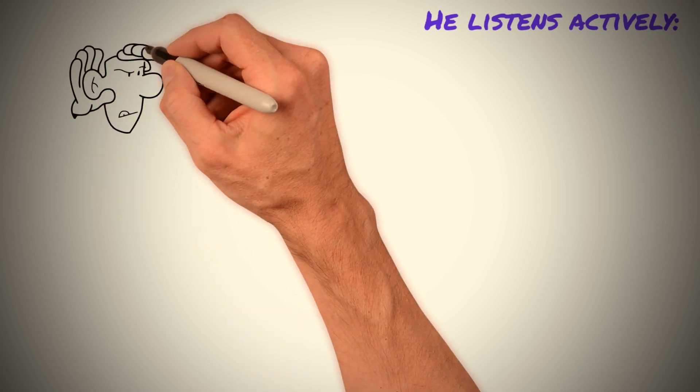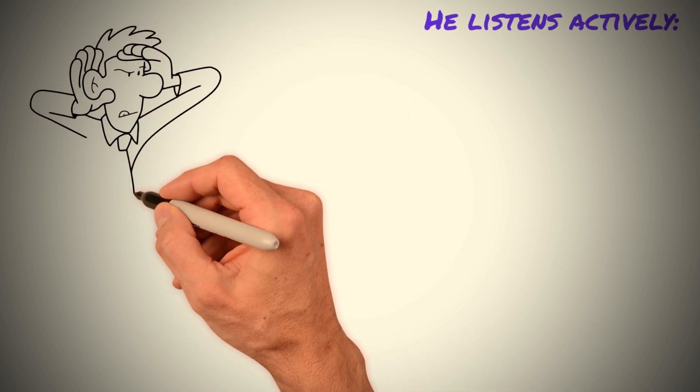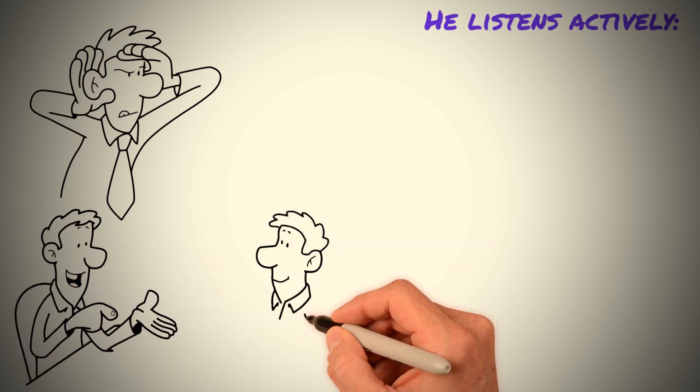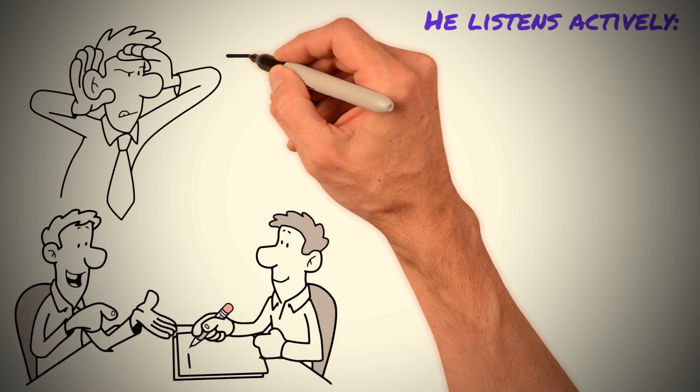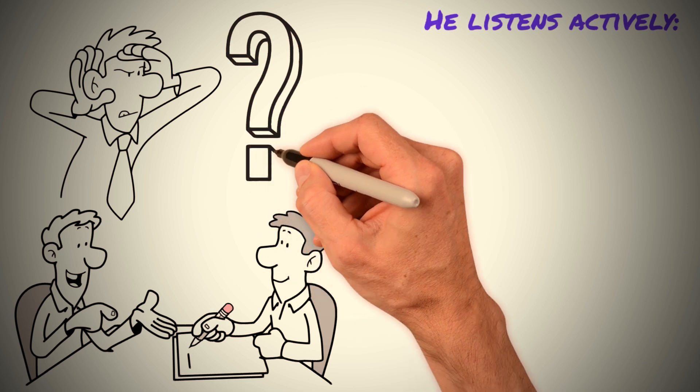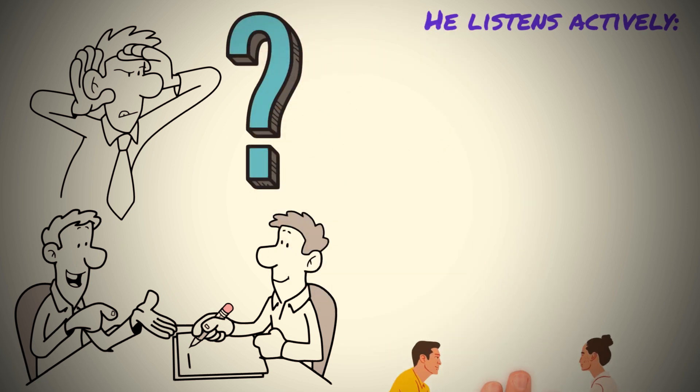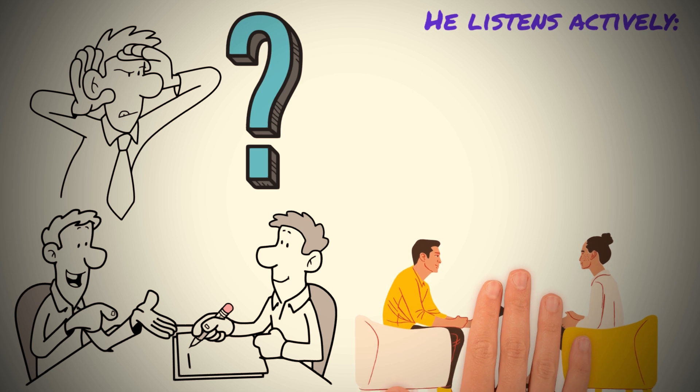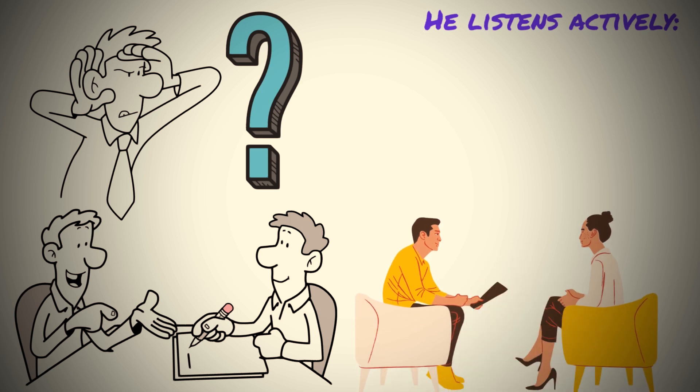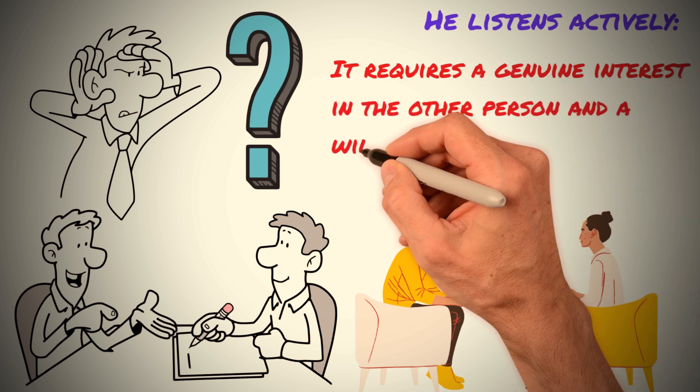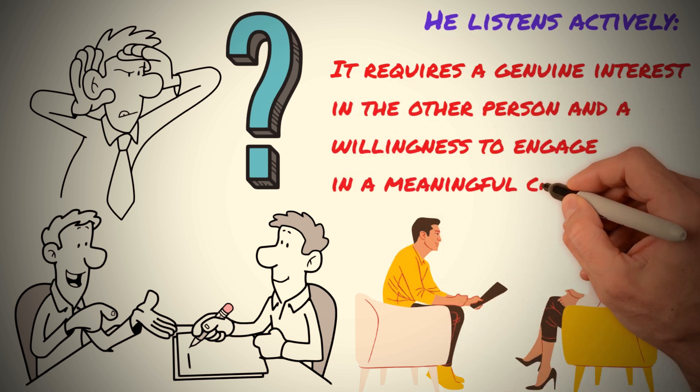One of the key ways that a Sigma male shows respect for others is by listening actively. This means that they pay close attention to what the other person is saying, ask thoughtful questions, and seek to understand the other person's perspective. Active listening involves more than just hearing what someone is saying. It requires a genuine interest in the other person and a willingness to engage in a meaningful conversation.